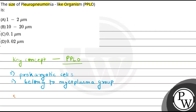Now, if we talk about their size — how much size is it? That is around 0.1 micrometer. And they are free-living, with a simple structure — simple prokaryotic cells. So, our correct option here is Option C, that is 0.1 micrometer.